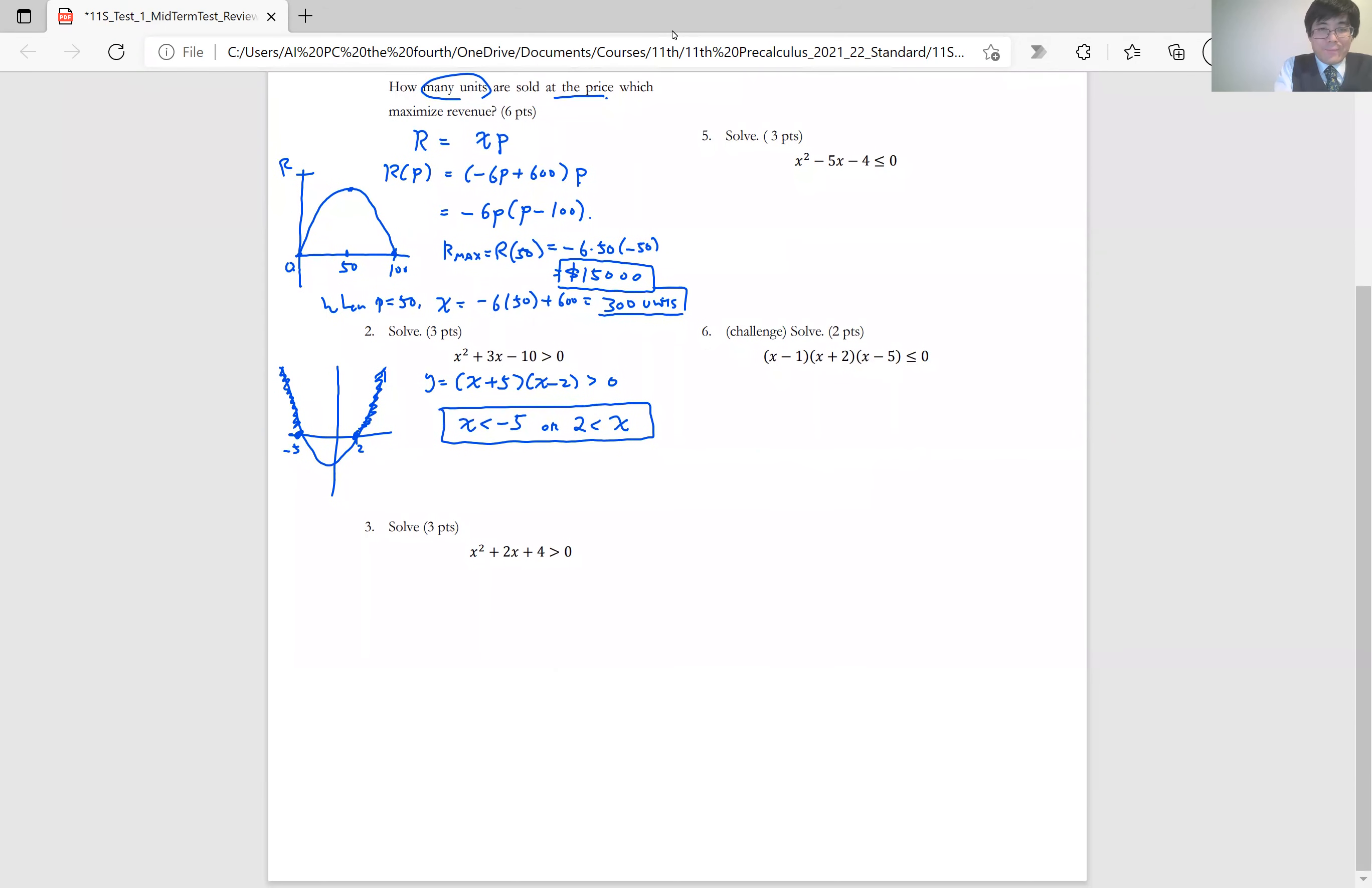Number three. X squared plus 2x plus 4 is greater than 0. For this one, you cannot factor it by integers. So if you want to find where the x-intercept is, to find x-intercept, you are going to solve the quadratic equation using either completing the square or using a quadratic formula.